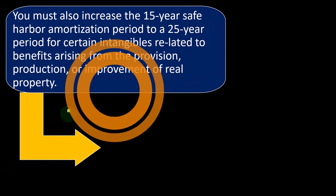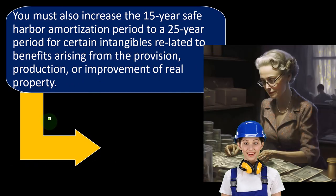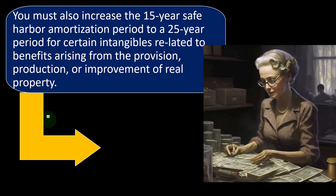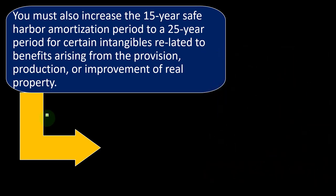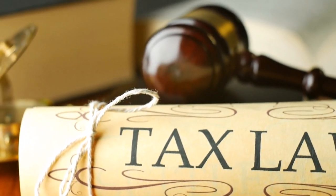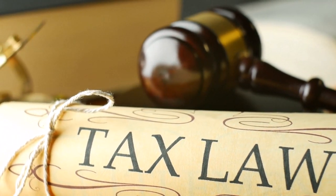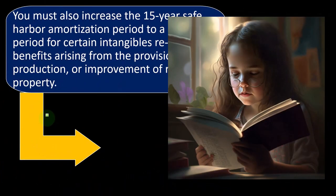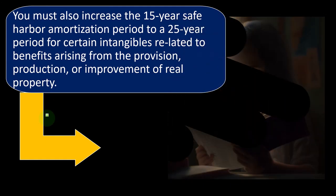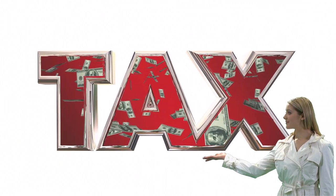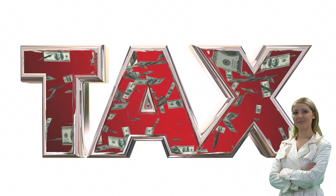You must also increase the 15-year safe harbor amortization period to a 25-year period for certain intangibles related to benefits arising from the provision, production, or improvement of real property. Note that the tax code tells us how many years we have to depreciate something over and often what method to use. Under GAAP on the financial accounting side, we might have more leeway to choose how long to depreciate something, since the incentive is to report accurately for decision-making purposes rather than to reduce taxes.